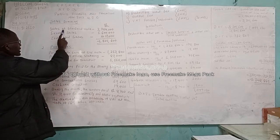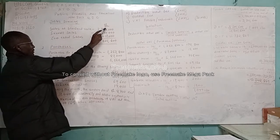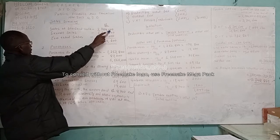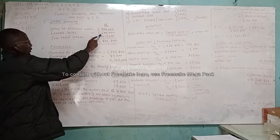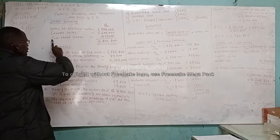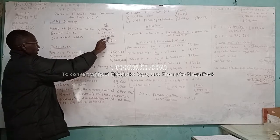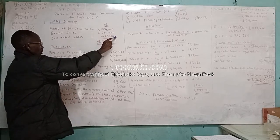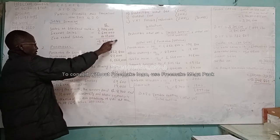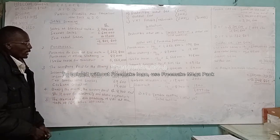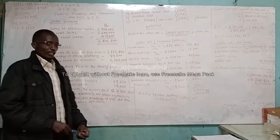We have sales at standard rate 2,784,000, exempt sales 1,600,000, zero rated sales 417,000, and the total of these three is 4,801,600.